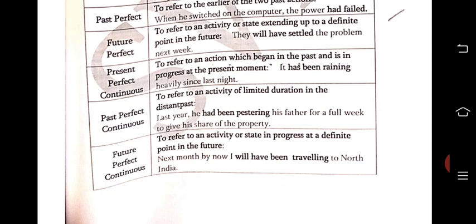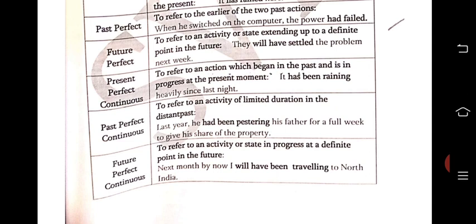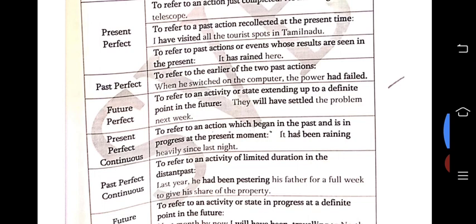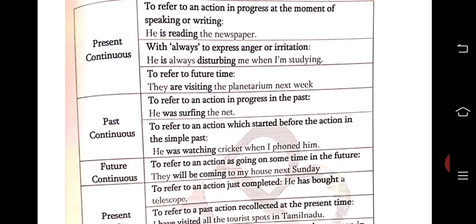To summarize: if you have 'by plus time', easily convert it to future perfect. If you have 'by plus time' plus continuity, consider it as future perfect continuous. For perfect tense, the formula uses 'have' or 'has' plus V3. For perfect continuous, use 'have' or 'has' plus 'been' plus the V-ing form.